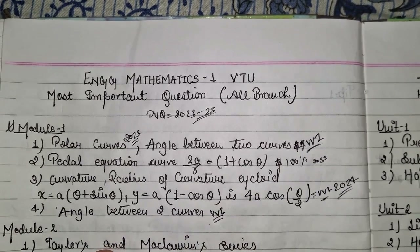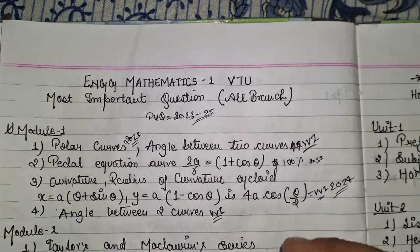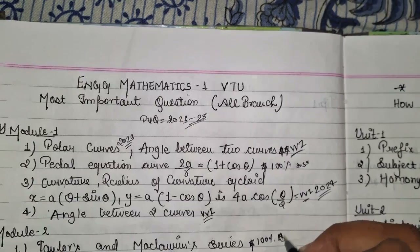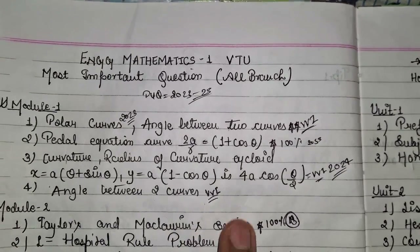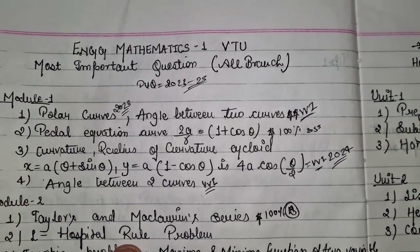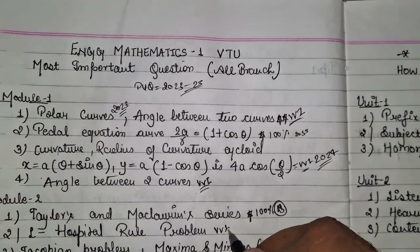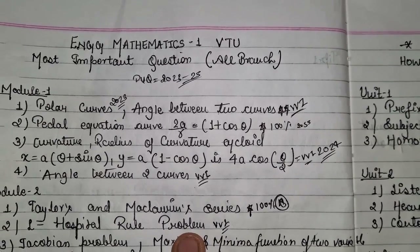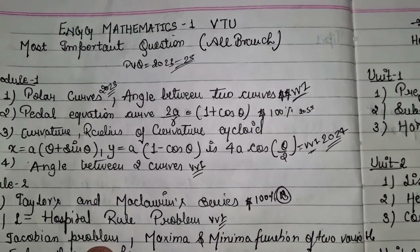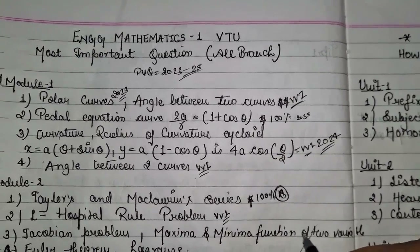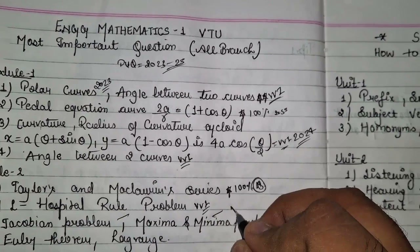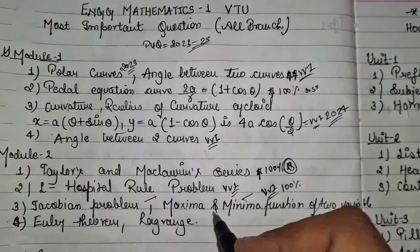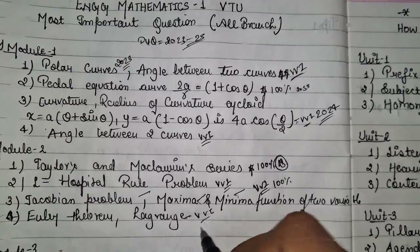Module 2: Question one is the Taylor and Maclaurin series — 100% one question worth 8 marks will be asked from this topic. Question two is the L'Hopital rule, asked two to three times across the last three to four years. Question three is the Jacobian problem. Maximum and minimum functions of two variables are also very important — 100% chances. Euler's theorem and Lagrange multipliers are the most important topics in this module.